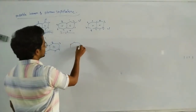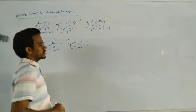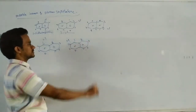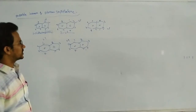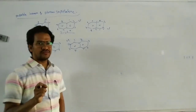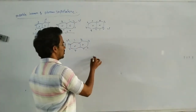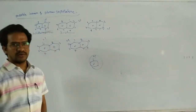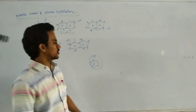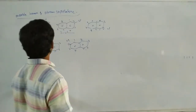This one is also 2-chloronaphthalene. Counting: 1, 2, 3, 4, 5, 6, 7, 8 — yes, 2-chloronaphthalene. So monochloronaphthalene derivatives are 2. Monochlorobenzene is only 1, but monochloronaphthalene derivatives are 2.